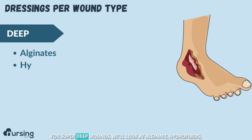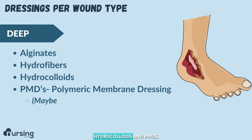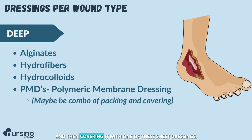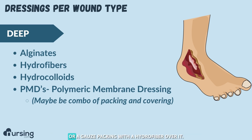For very deep wounds, we'll look at alginates, hydrofibers, hydrocolloids, and PMDs. Most of the time with a very deep wound, we are packing the wound and then covering it with one of these sheet dressings — you might see a wet-to-dry with a hydrocolloid over it, or gauze packing with a hydrofiber over it.